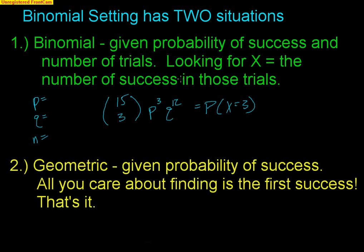We're done covering all that. However, we also have this other scenario called the geometric situation. A geometric situation is a very, very specific one. Kind of looks binomial, but it's really not. Here's the trick: in a geometric situation, you are given the probability of success, and all you care about is finding the first success. That's it. You don't care about 15 trials or 20 trials. In fact, there is no number of trials in a geometric setting. In a geometric setting, all you're looking for is the probability of your first success. Once that first success happens, you don't care about anything else.